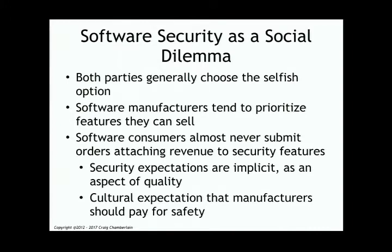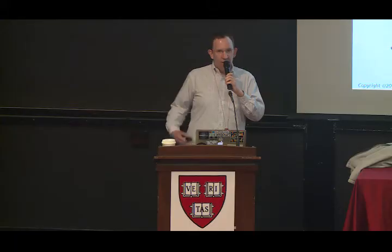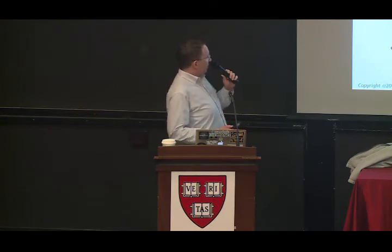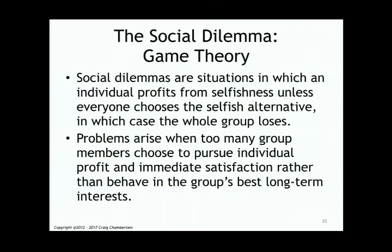A social dilemma, in game theory, is where both parties choose to act in rational self-interest, but this creates a bad outcome for all. It's a paradox. In this case, it's a social dilemma because both parties choose the selfish option — not to pay for better software security — and the result is worse software security for everyone. Individuals think they'll profit from selfishness unless everyone chooses the selfish alternative, in which case the whole group loses.